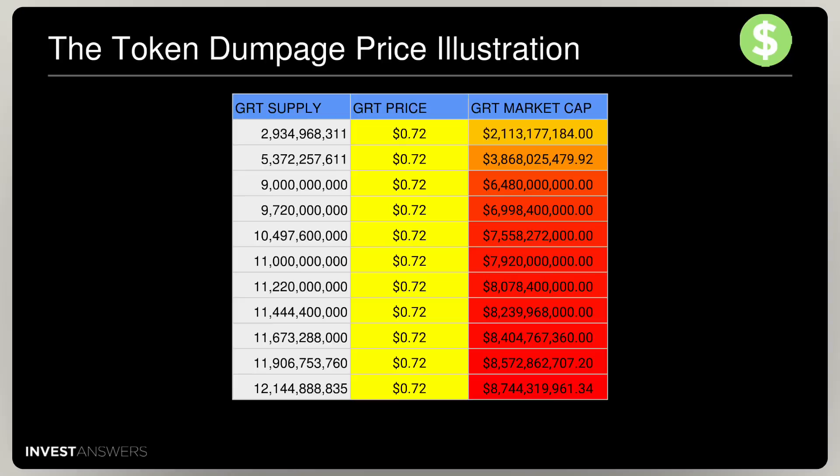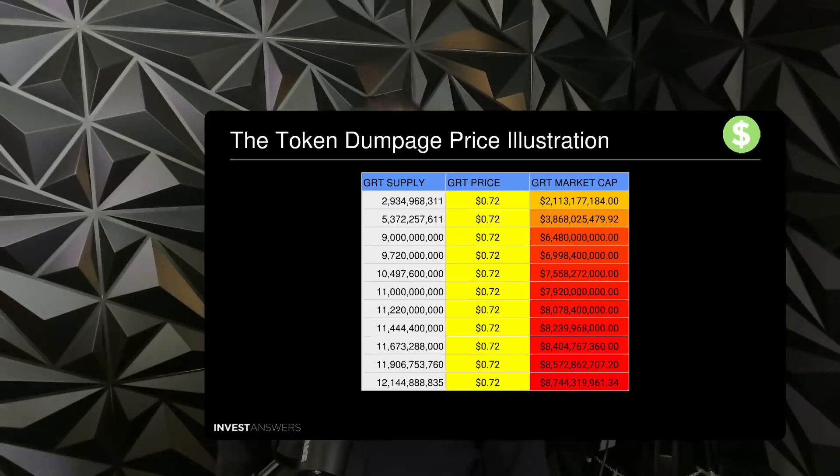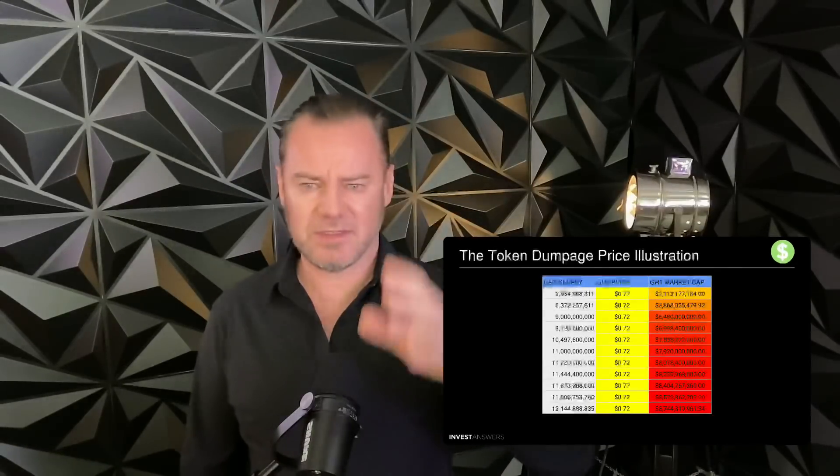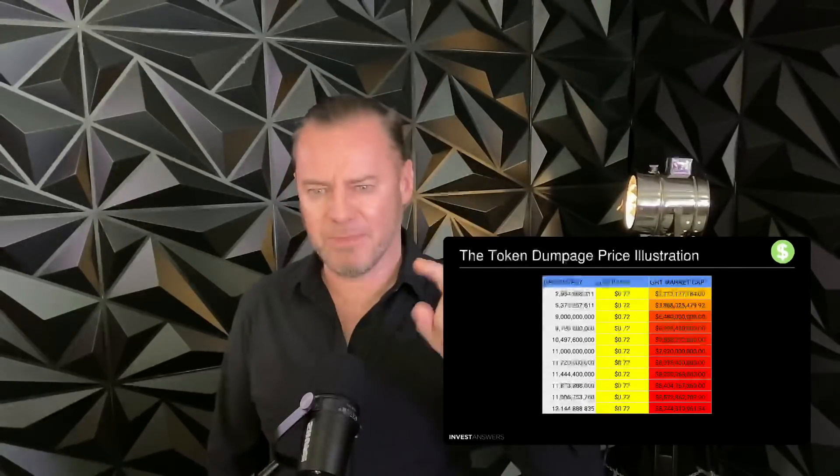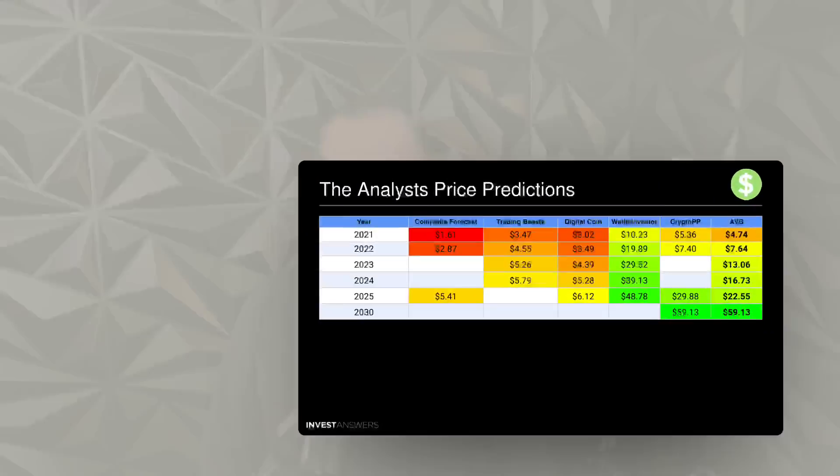Let me illustrate token dumpage. Imagine the GRT price stays at today's price of $0.72 for the next 10 years. As the supply actually increases, even if the price stays at $0.72, in order to absorb all those new tokens the market cap has to grow by 4.2x to nearly $9 billion. This exercise helps you wrap your head around actual pricing and why tokenomics is so important.